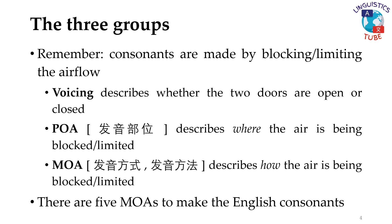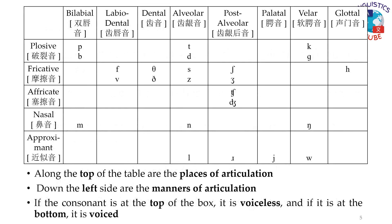There are five manners of articulation to make the English consonants. Here is the table that we saw in the previous episode. Along the top of the table are the places of articulation, and down the left side are the manners of articulation.